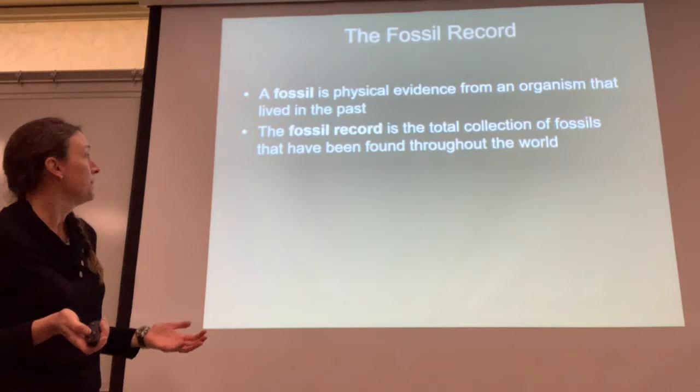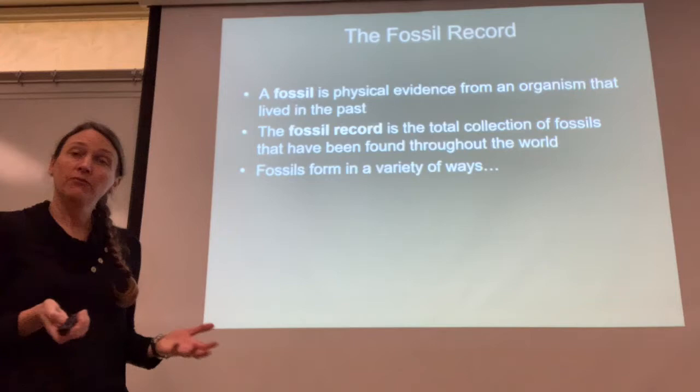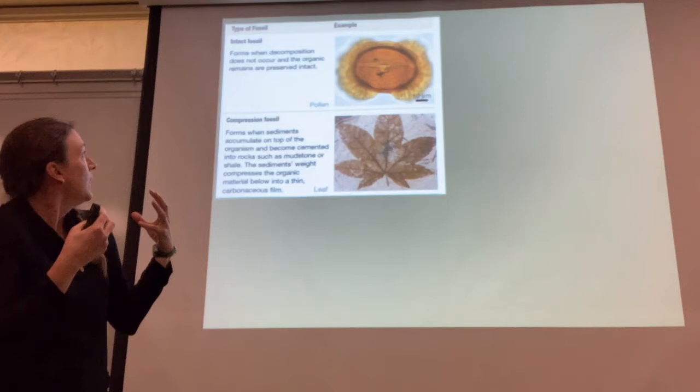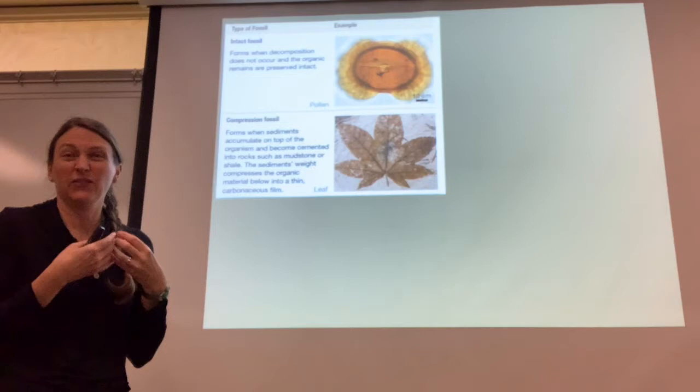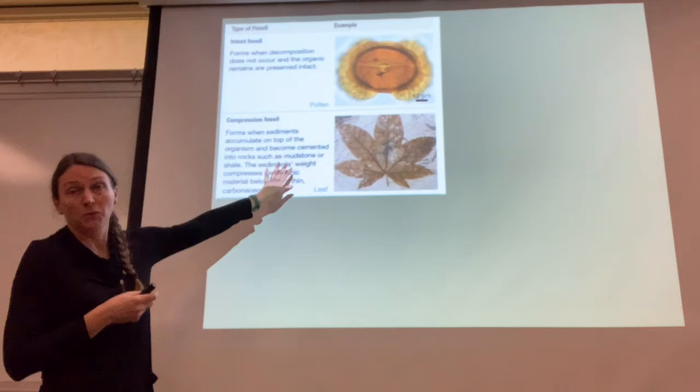A fossil is any physical evidence from the past, and the fossil record is the total collection of fossils that have been found throughout the world. Fossils form in a variety of ways. The first is an intact fossil — something where decomposition doesn't occur and the organic remains are preserved intact. Things found in peat bogs are sometimes intact fossils.